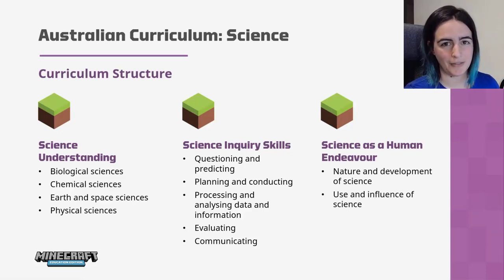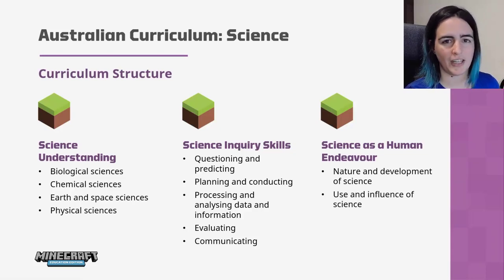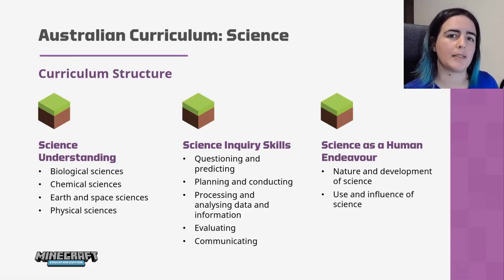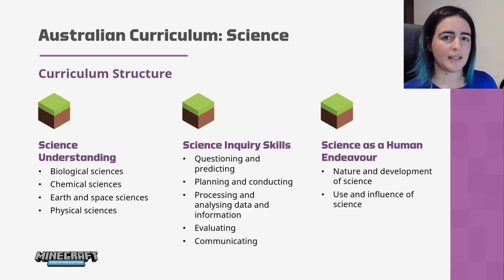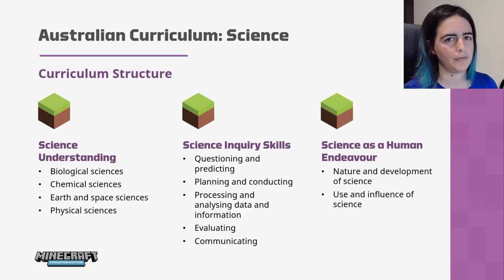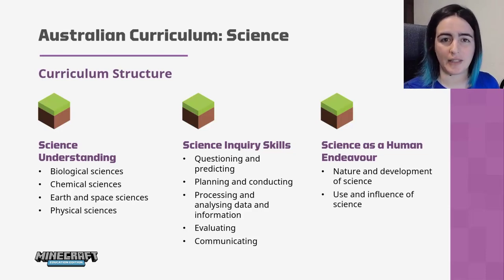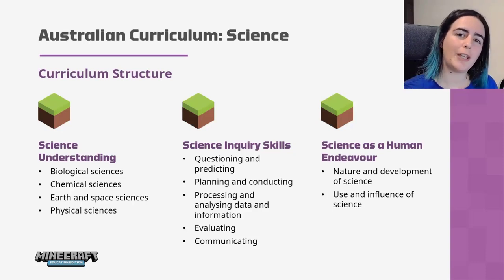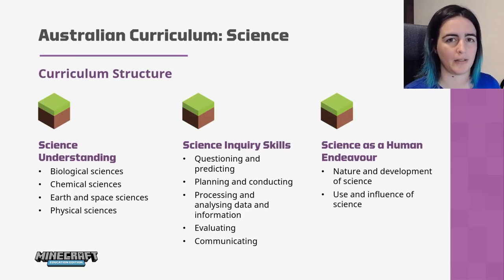The third strand is science as a human endeavour, also done throughout the year. It's separated into two sections: the nature and development of science, which looks at the history of how things developed over time — including famous scientists and inventors from different cultures — and the use and influence of science, looking at how science has impacted our everyday lives. I'll run through ideas from Minecraft for each strand, then showcase existing Minecraft lessons on the Education Edition website.